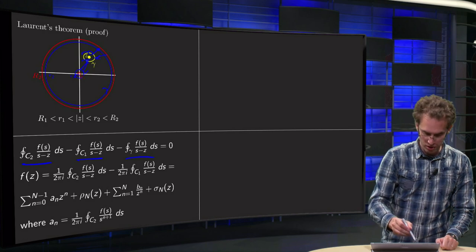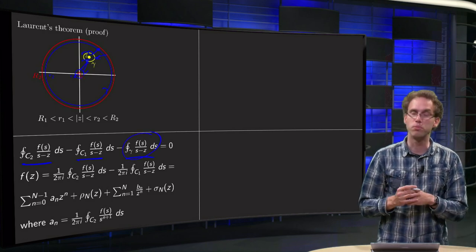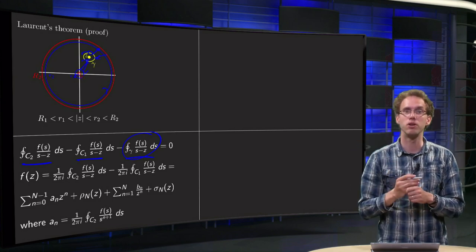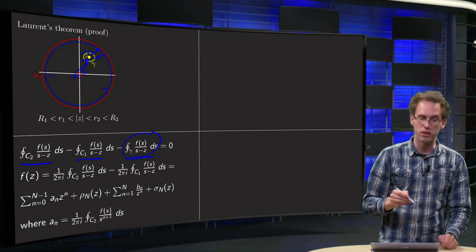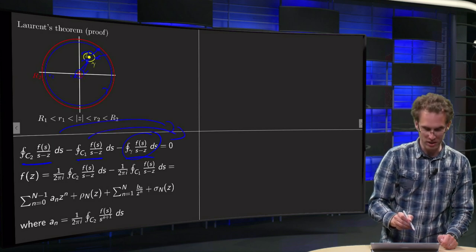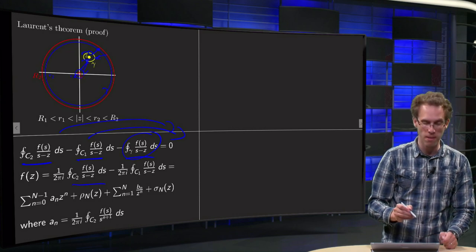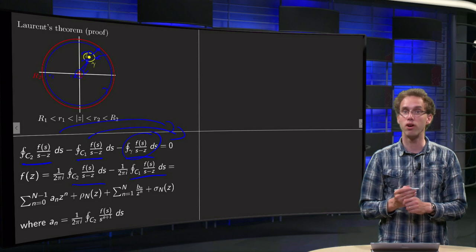Now this last integral over here is up to a factor 2πi your f of z, because you go around your point, so you use the integral formula. So you know, bringing this one and that one to the other side, that your f of z equals 1/(2πi) integral over C2 minus 1/(2πi) integral over C1.